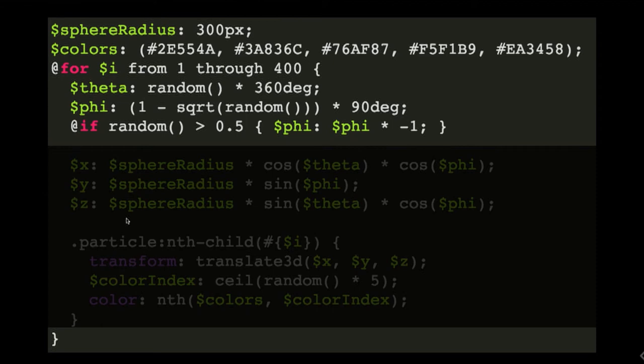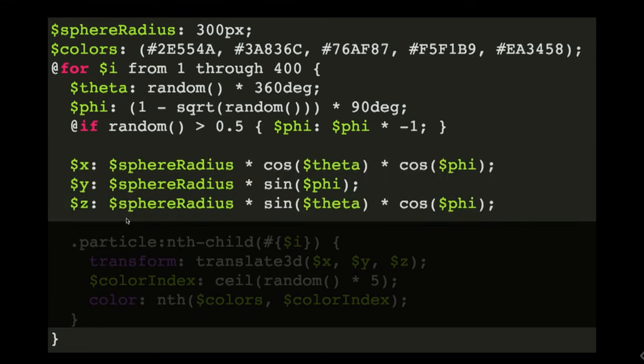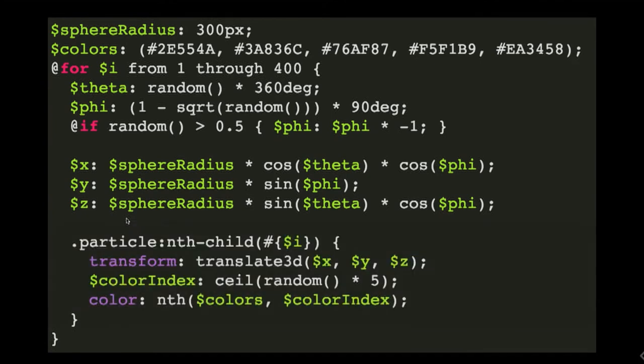Now that we have our three values, radius, theta, and phi, we can use a parametric equation to get the coordinates of x, y, and z. All we have to do now is to apply these coordinates using a 3D transform and pick a random color from the SASS list.